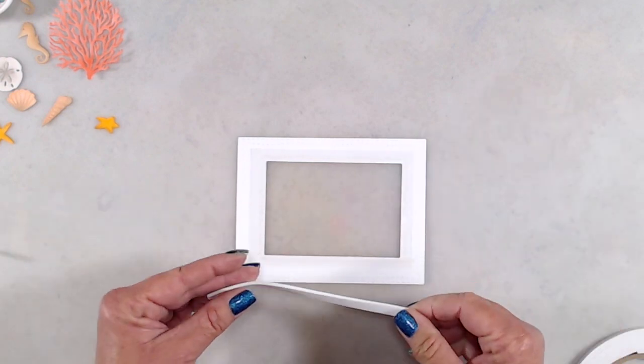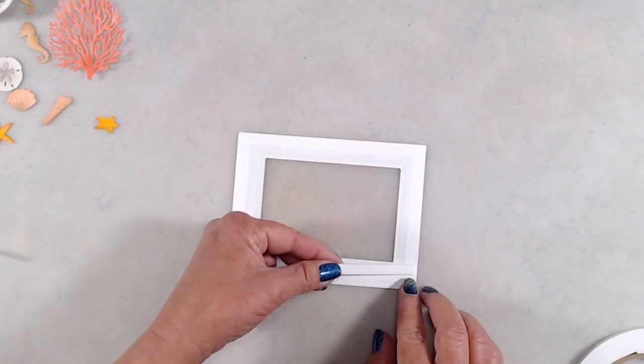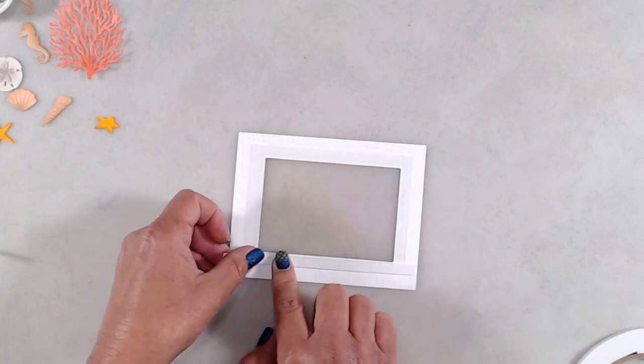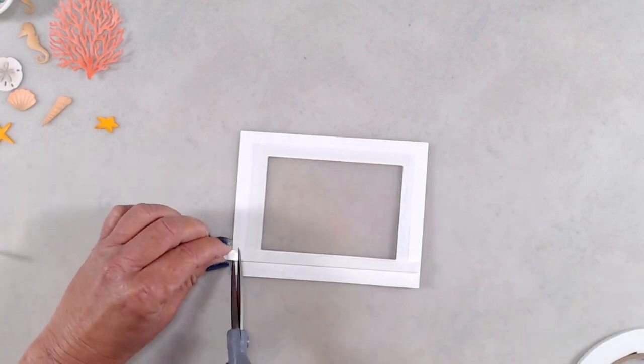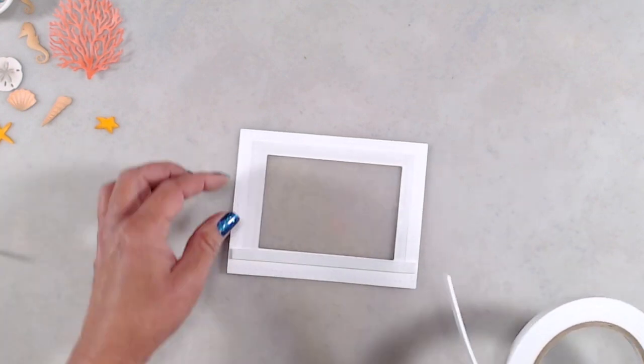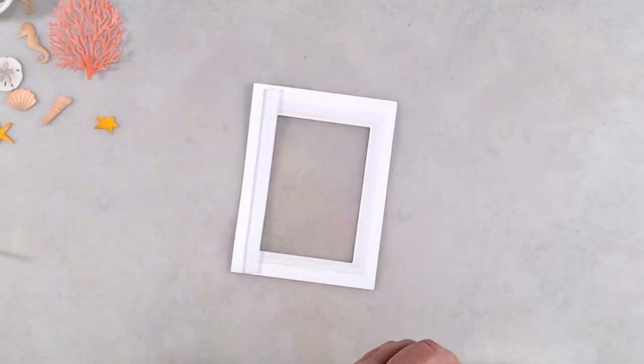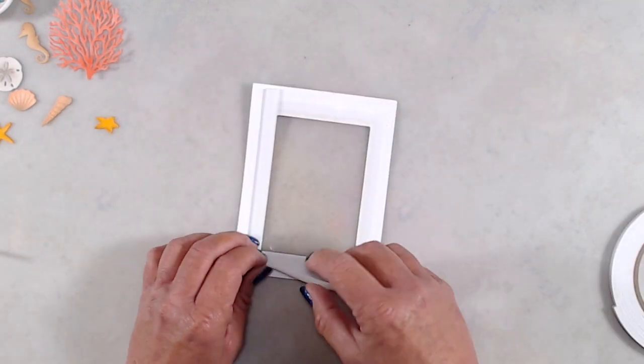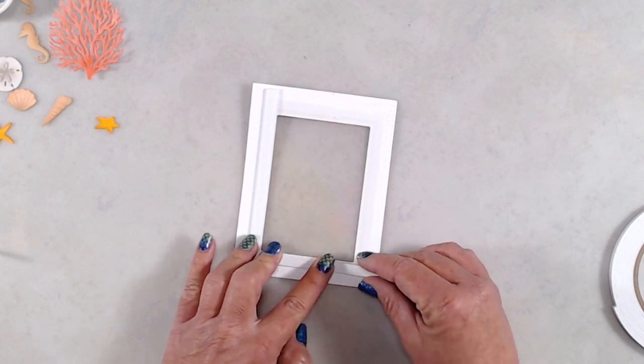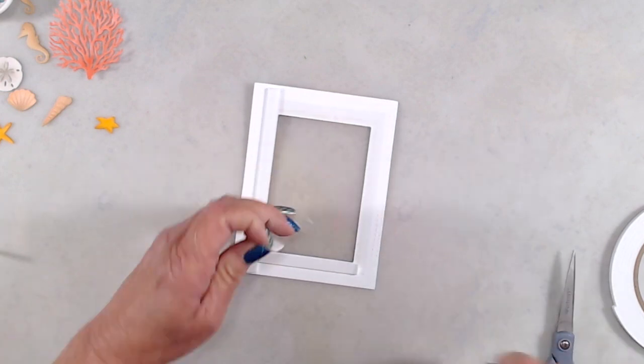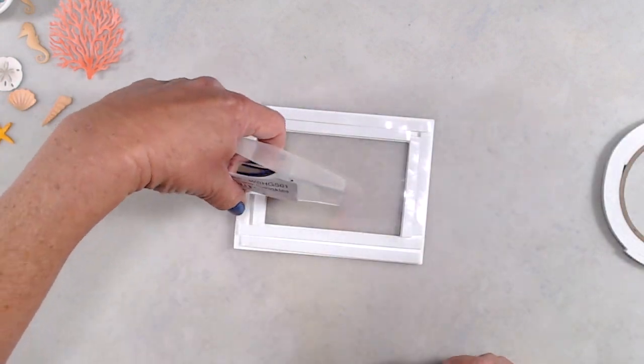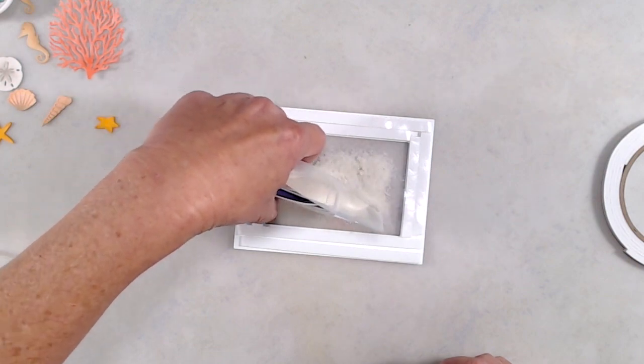Once I had the acetate adhered in place, I started adding in my foam tape. I started putting foam tape closest to the opening of the window first, and I made sure to have a really tight contact between those pieces of foam tape to make sure that the sand didn't spill out, or the shaker bits didn't spill out. I also applied foam tape all the way out to the edges of my frame to make sure that it was nice and flush.